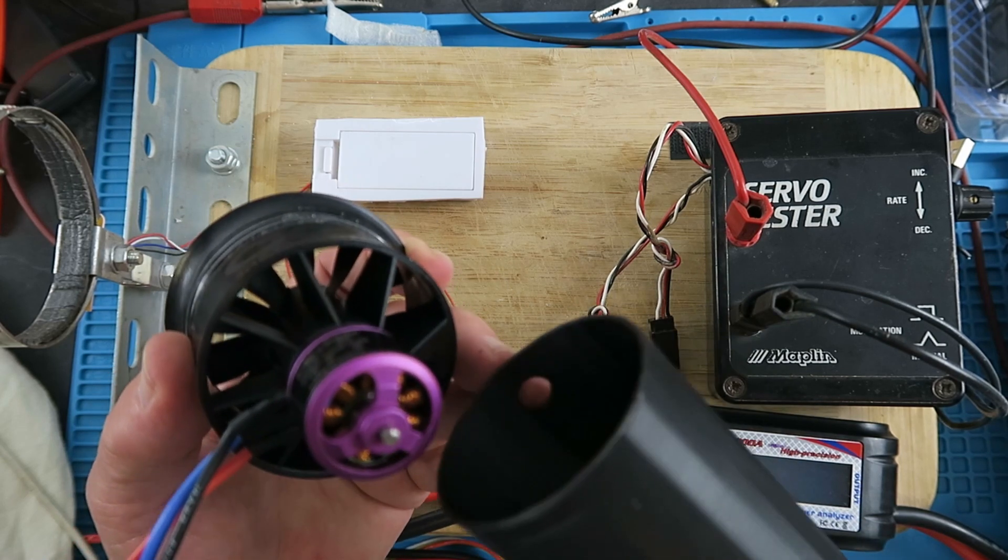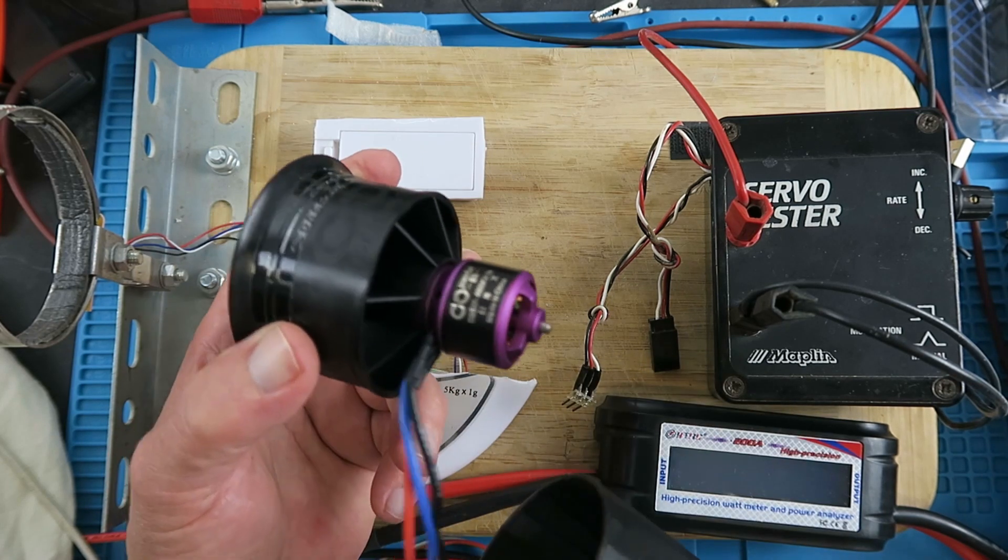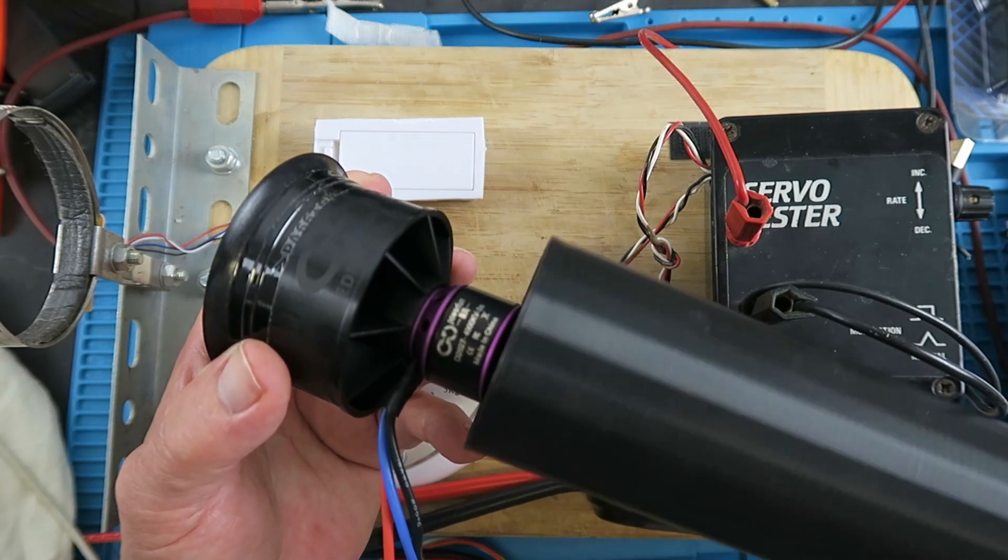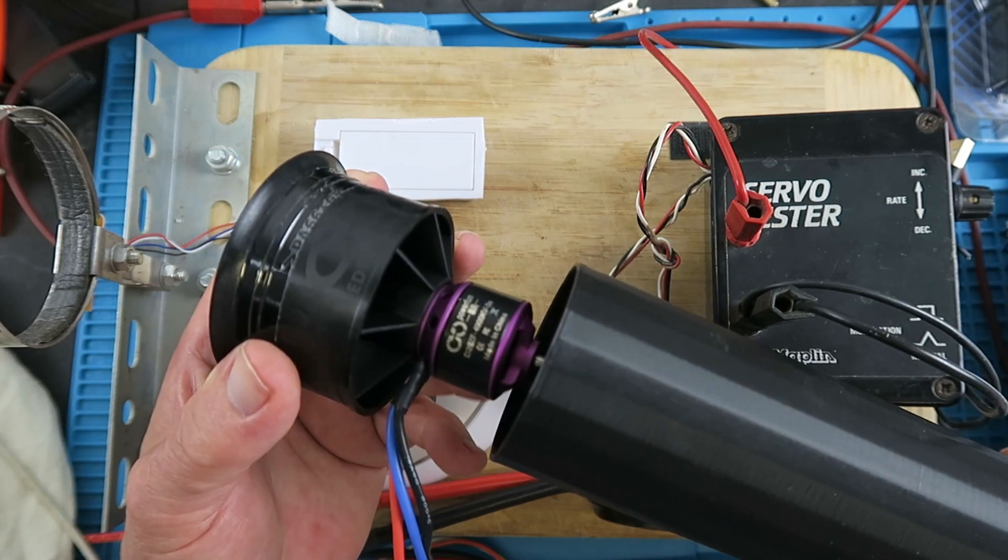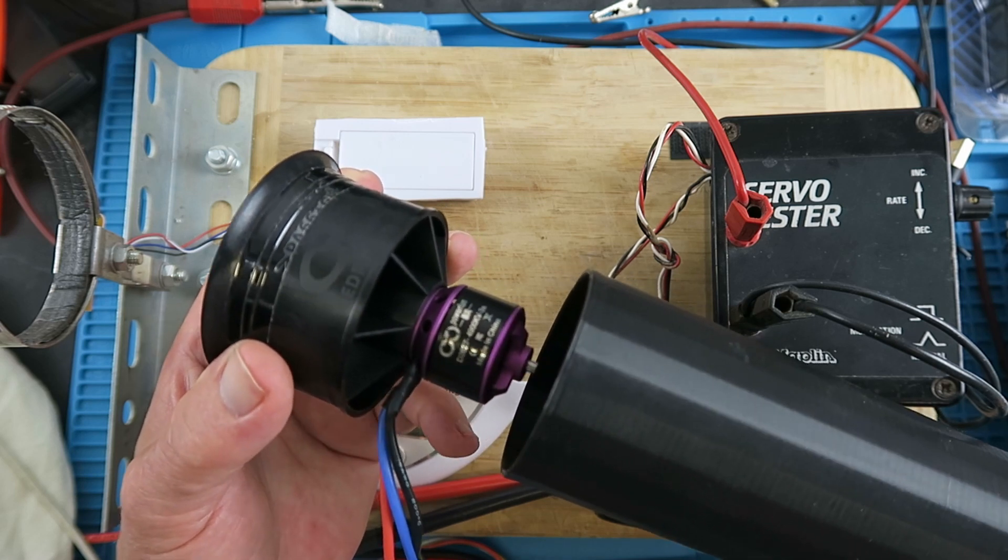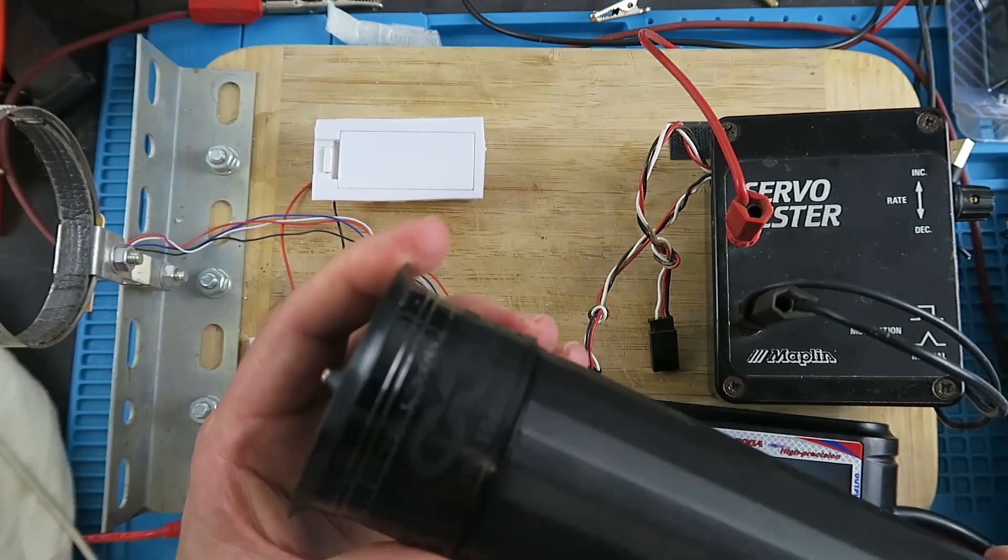I have seen some designs where they hang the ESC in the airflow - obviously that's going to give good cooling, but I think it goes against what we're trying to do in smoothing that airflow out. So I'm going to have to desolder this and pass those wires through here.